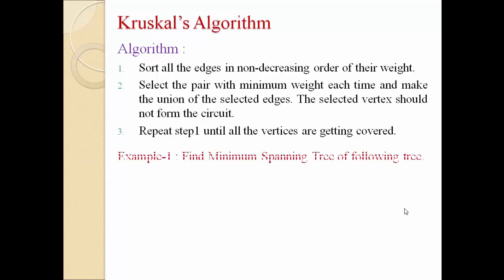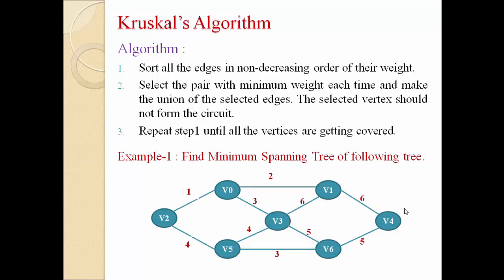Let's take an example so you can easily understand. Suppose we need to find the minimum spanning tree of a given graph with a number of edges, nodes, and cycles. When finding a minimum spanning tree there must not be any cycle. As per Kruskal's algorithm, step one: we have to select the edge which has a minimum cost. One is the minimum number among all the edges, so we select edge V0 to V2 first.